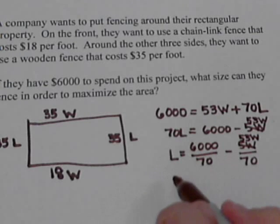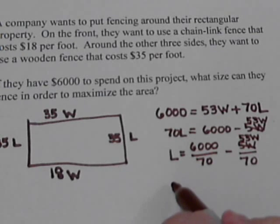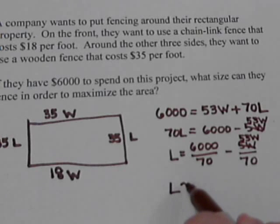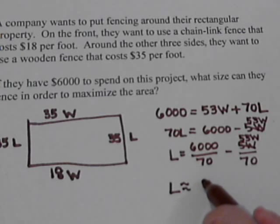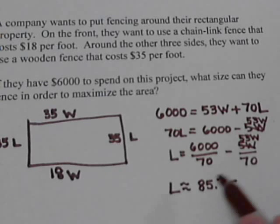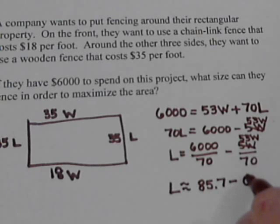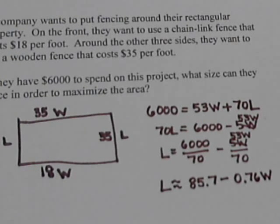And now we're going to simplify, because we're just estimating it. Probably real world numbers aren't always nice. So let's get a decimal. If we do $6,000 divided by $70, that comes out about $85.7 minus, and then $53 over $70 is about $0.76W.